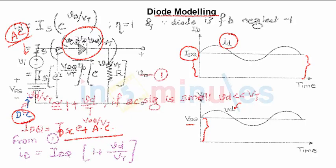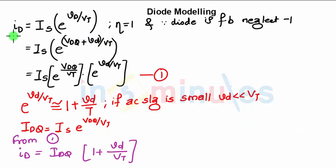Now coming to the analysis, the diode equation ID = IS e^(Vd/Vt). The actual equation is ID = IS e^(Vd/ηVt) - 1. So here we are considering the value of η as one and we are neglecting this negative one because the diode is forward biased.